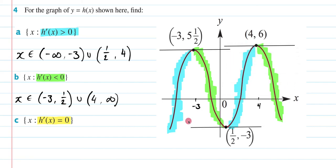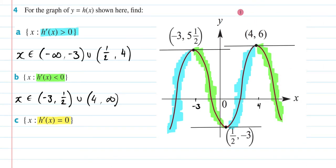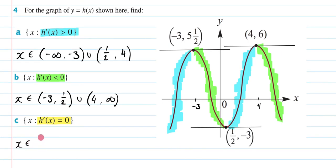So as you can see, every time it's turning is where I'm having that tangent. Let me get rid of that. My tangent has a gradient of 0, so that means right here what my x is going to be is just negative 3, a half, and 4.